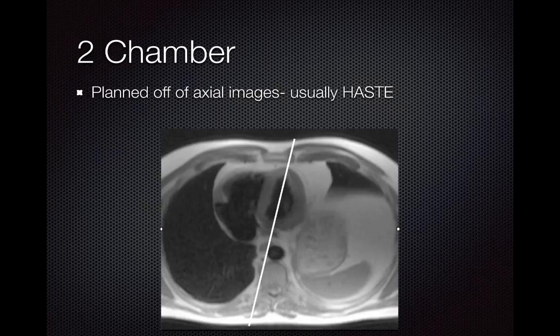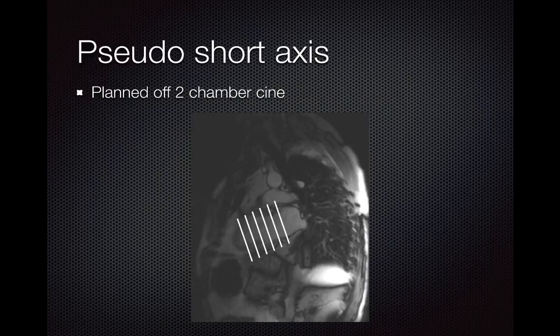We find the image in the axial HASTE stack where we can see the left ventricle nicely, then line up parallel to the interventricular septum in the middle of the LV to acquire our two-chamber view. This can be either a static image or a dynamic cine image. Here we have our two-chamber view showing the left atrium and left ventricle.